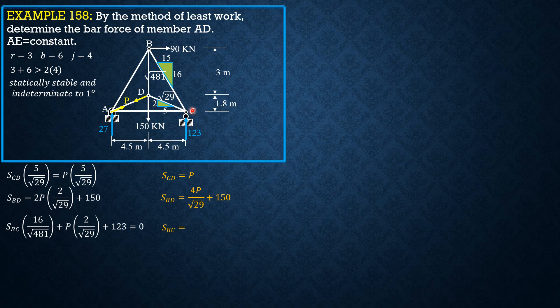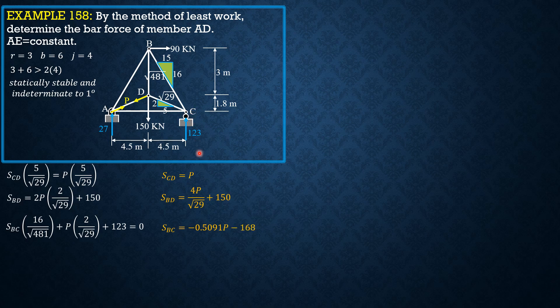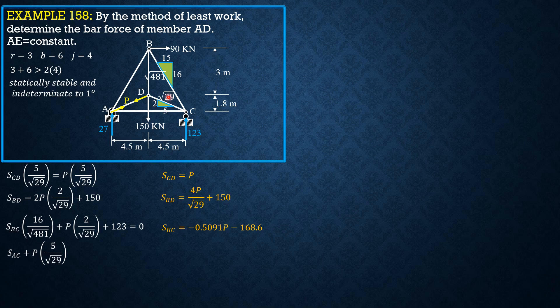Summation forces horizontal to the left positive. Sac plus P times 5 over square root of 29 plus quantity negative 0.5091P minus 168.6 times 15 over square root of 481 equals 0. So Sac is equal to negative 0.5803P plus 115.312.